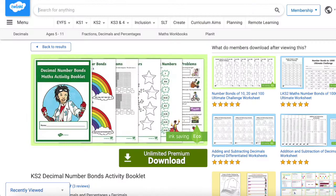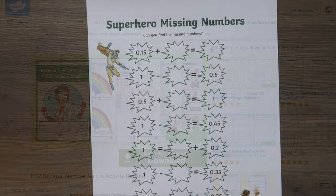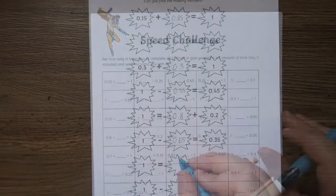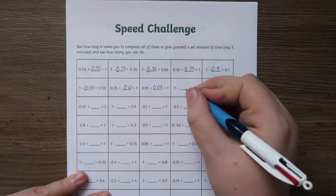The Key Stage 2 Decimal Number Bonds Activity Booklet is a fantastic pack for allowing children to practice skills they have learned on decimal number bonds by applying them to find the solution to problems and puzzles.